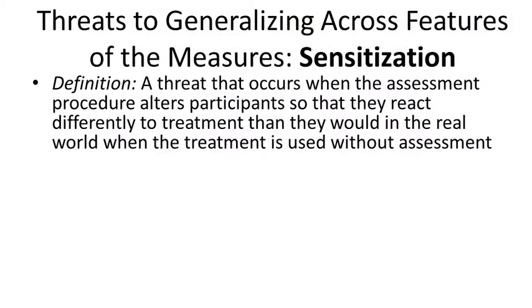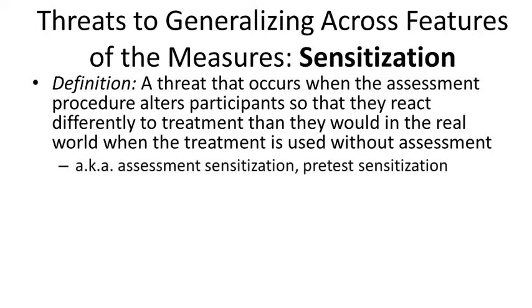Then you have category three, which refers to threats to generalizing across features of the measures. The basic idea of this category is something called sensitization — a threat that occurs when the way you measure people alters them, and as a result they react differently to future treatments and differently than they would in the real world. This is also called assessment sensitization or pre-test sensitization: you bring somebody into your laboratory, you tell them you want to measure them, and just the fact that you're measuring them changes those measurements.